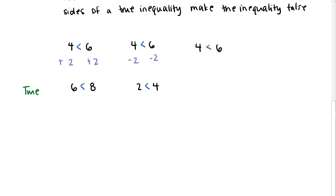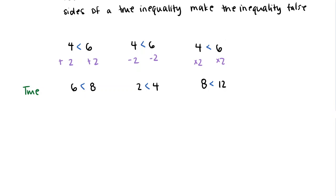Another thing we can do is multiply by a positive number, say 2, and we get 8 is less than 12 — a true statement. We can also divide both sides by positive 2 and get 2 is less than 3, which is also true. So all of these operations are perfectly valid to do when solving an inequality. You might be wondering: well, we've tried them all — what could possibly go wrong?